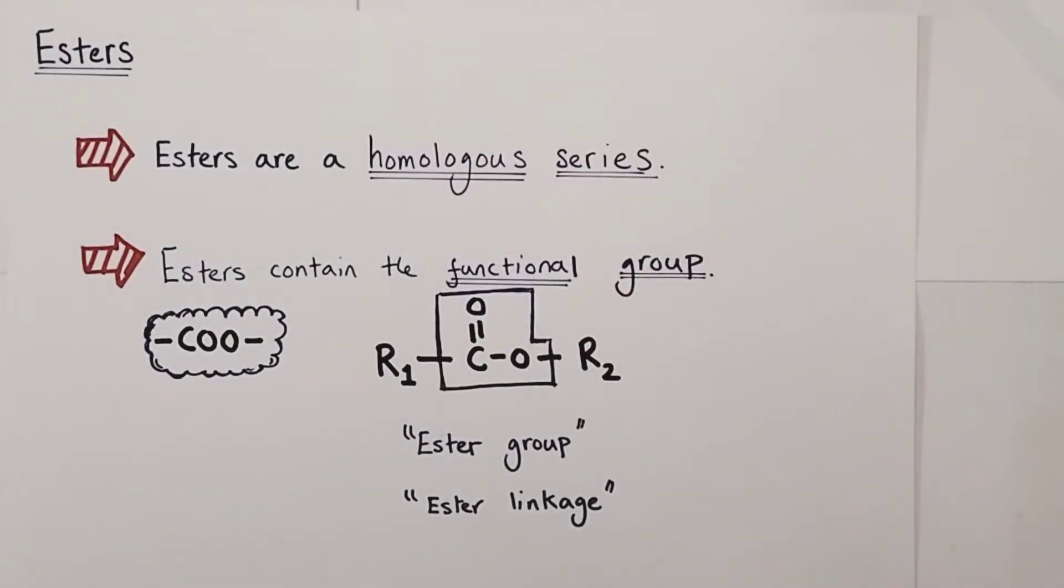Hi there, welcome to this alchemist chemistry video looking at the family of molecules known as the esters. Esters are another example of a homologous series. That means they are a family or series of organic molecules that have very specific similarities.